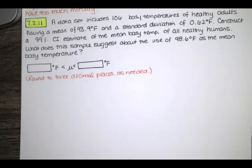The problem statement says a data set includes 106 body temperatures of healthy adults, and it has a mean of 98.9°F and a standard deviation of 0.62°F. We're asked to construct a 99% confidence interval estimate of the mean body temperature of all healthy humans.